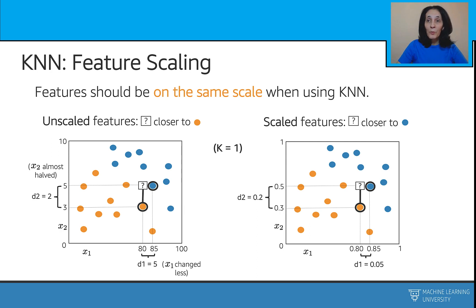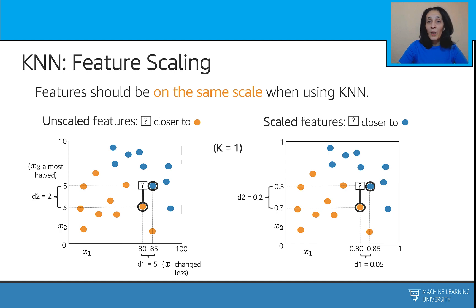Typically with k-nearest neighbor, we also first rescale the numerical features, since those numerical features may be measured in different units. This unit difference causes distance-based algorithms like k-nearest neighbor to not perform optimally, so it's necessary to rescale features that have different units so they have the same scale. Let's examine a k-nearest neighbor model with k equals 1 for simplicity, in an unscaled versus scaled situation, considering two features with quite different units.